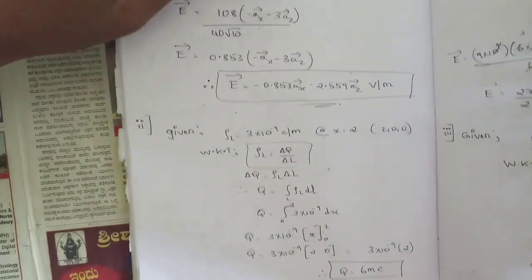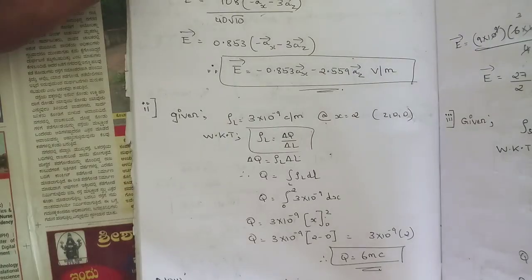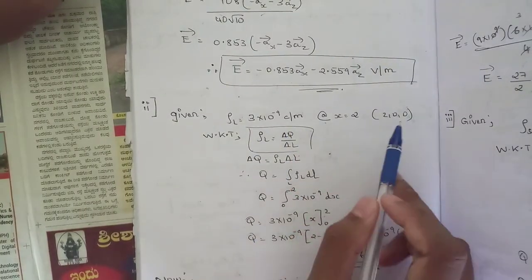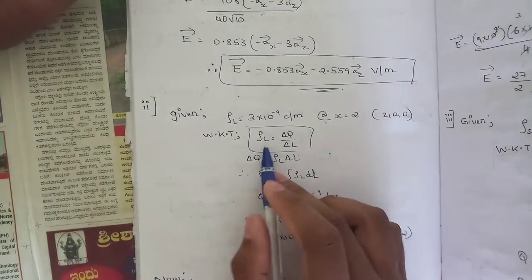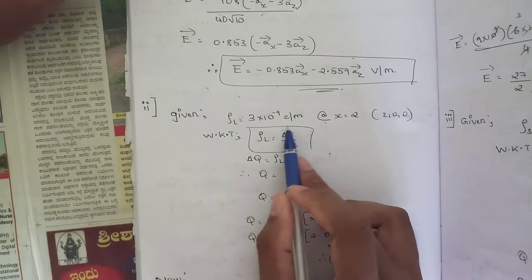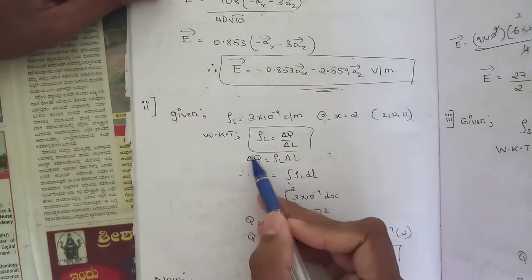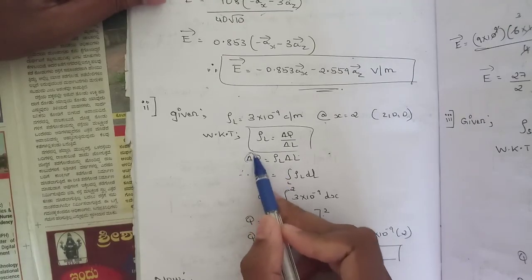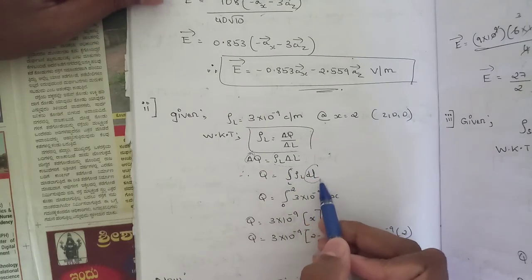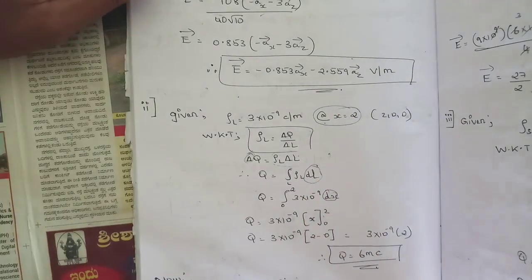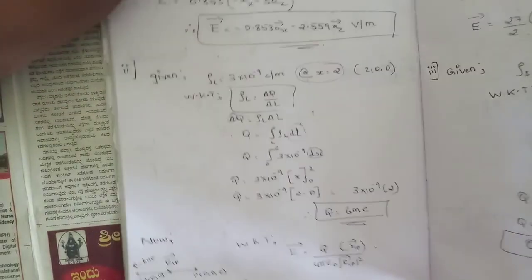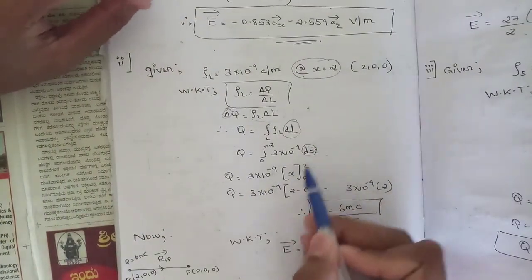For sub-question (b): the line charge density ρl is 3 nanocoulombs per meter at x equal to 2. From the definition ρl equals ΔQ/ΔL, we get Q equals the integral of ρl dL. Here dL equals dx since x is specified. Integrating ρl from 0 to 2 gives 3 into 10⁻⁹ times 2, so Q equals 6 nanocoulombs.